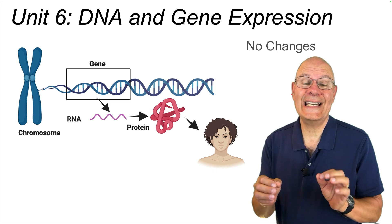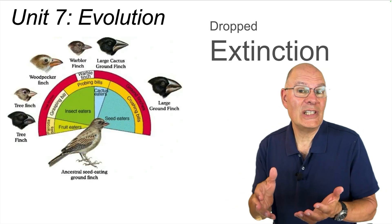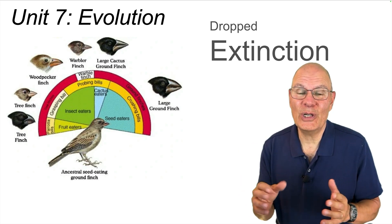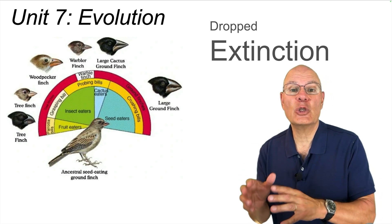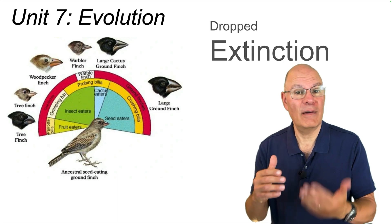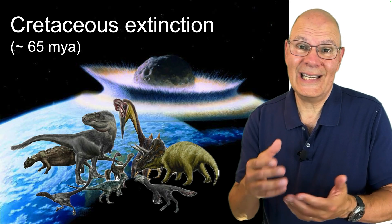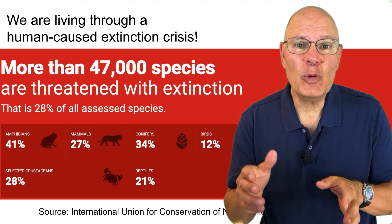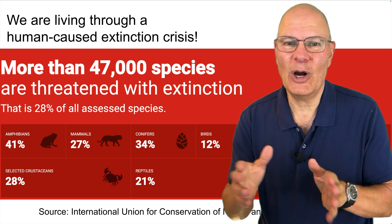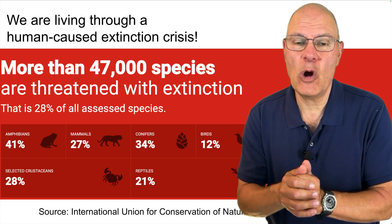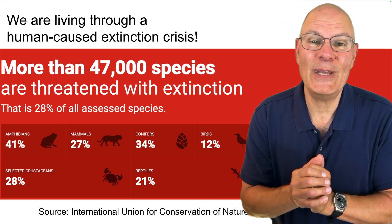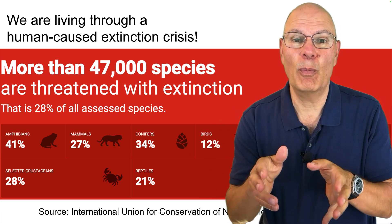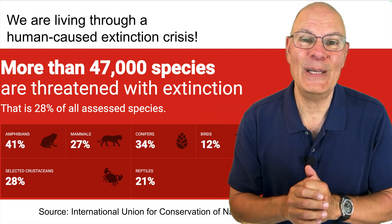Unit 6, DNA and gene expression — no changes. In Unit 7 of AP Bio, which focuses on evolution and is the biggest unit of the course, the only change was that the College Board dropped the teaching of extinction. Extinction isn't something that only happens to creatures like dinosaurs — we are living through a human-caused extinction crisis, and we are the cause of it. It's important to know about, but it's not in AP Bio anymore; maybe you'll encounter it in AP Environmental Science.